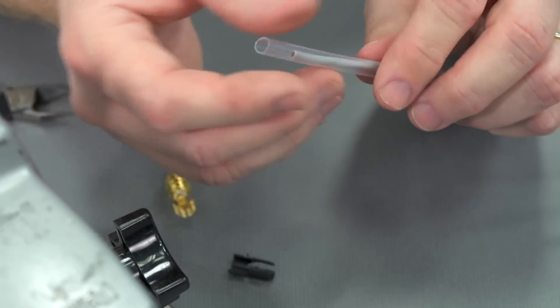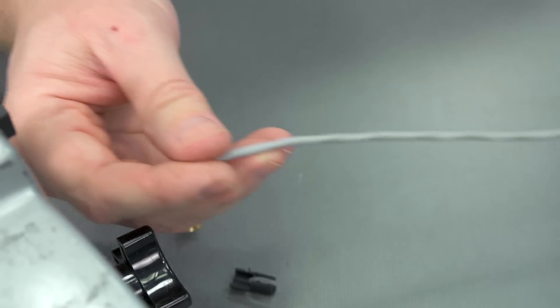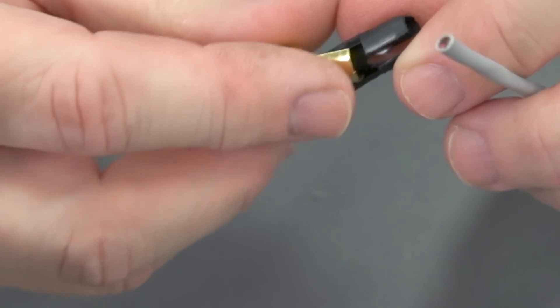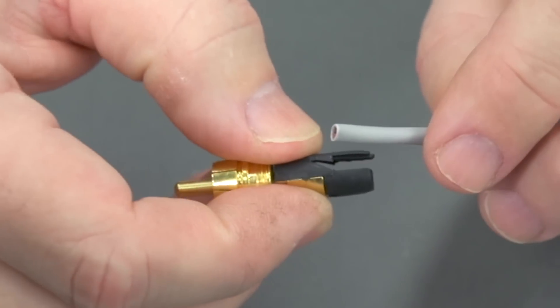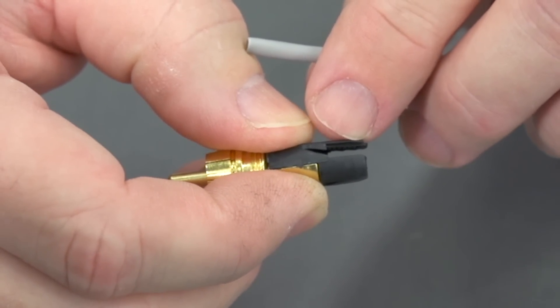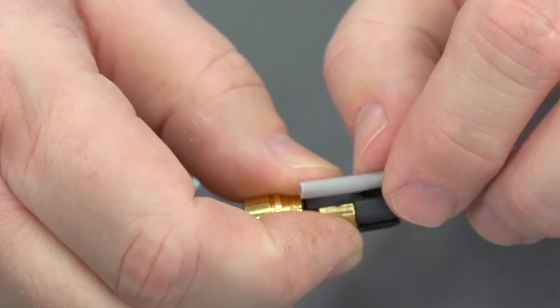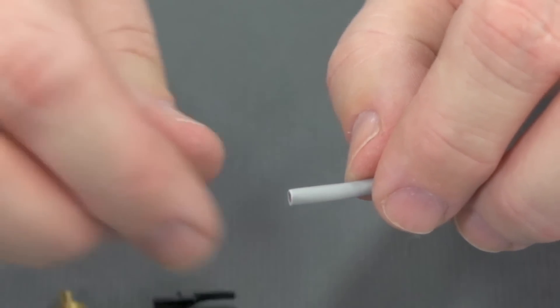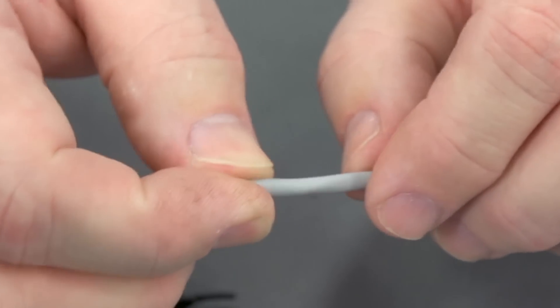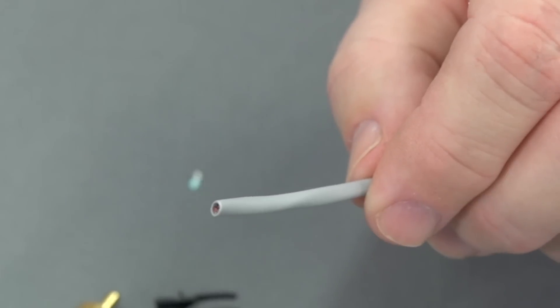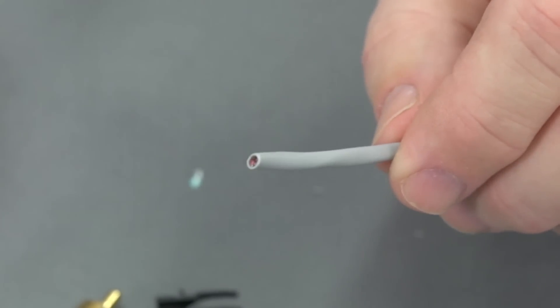Like everything else we're going to do, we're going to put some heat shrink on, and then we can begin to strip back the jacket. As we begin to test fit this assembly, I want to make sure that the jacket is under the serrations here for the strain relief. In this particular case, I'm not going to be removing much jacket. I can make things a little easier and go ahead and remove a little more jacket than I need to.